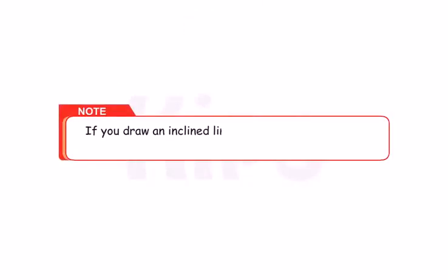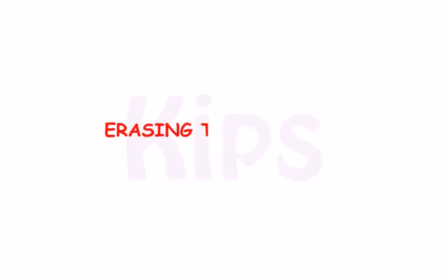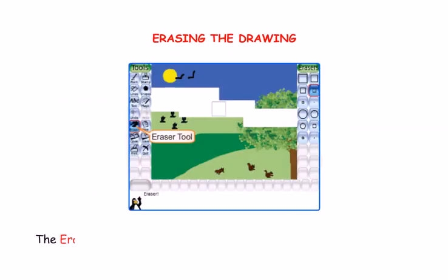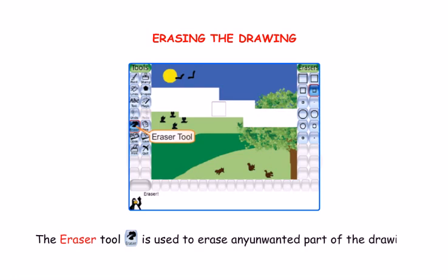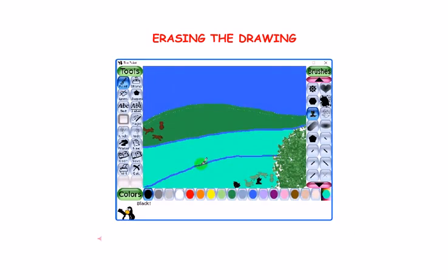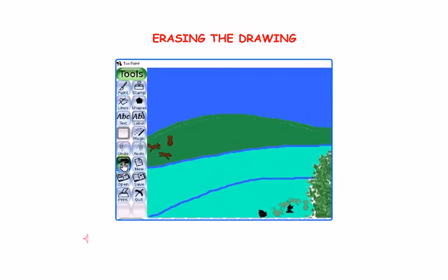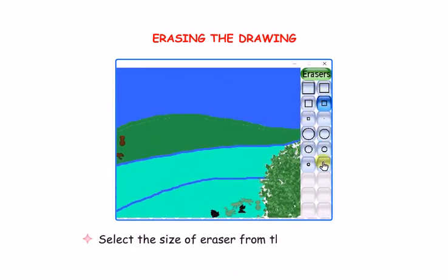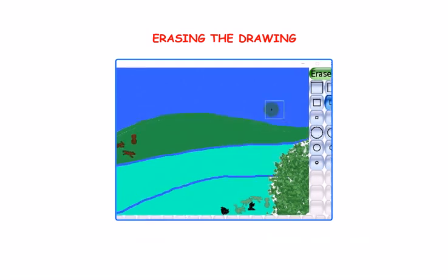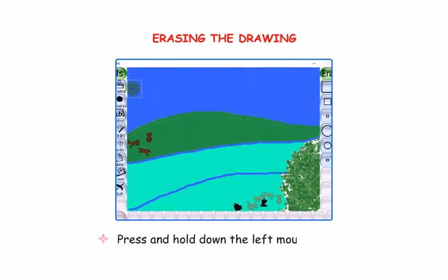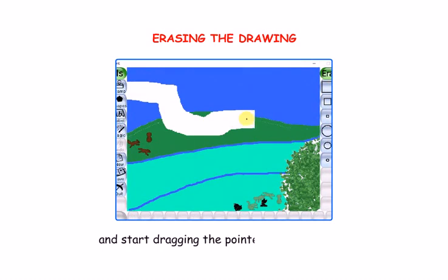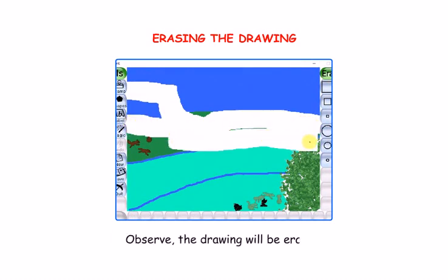If you draw an inclined line, you will find an inclined pattern. The Eraser Tool is used to erase any unwanted part of the drawing. Click on the Eraser Tool in the Tools Bar. Select the size of eraser from the Selector box. Press and hold down the left mouse button and start dragging the pointer on the drawing. The drawing will be erased.